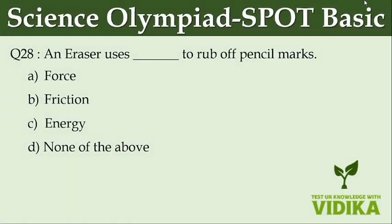An eraser uses dash to rub off pencil marks. Option A, force. Option B, friction. Option C, energy. Option D, none of the above.